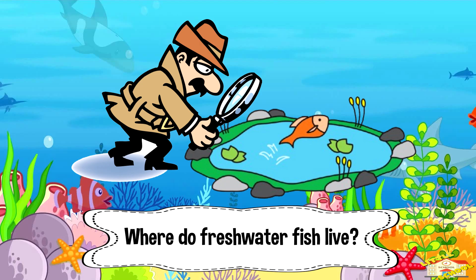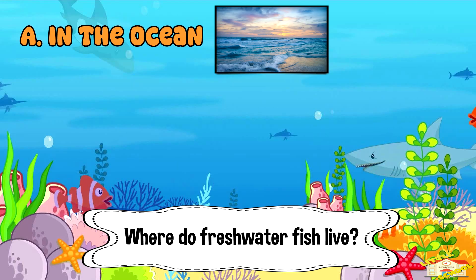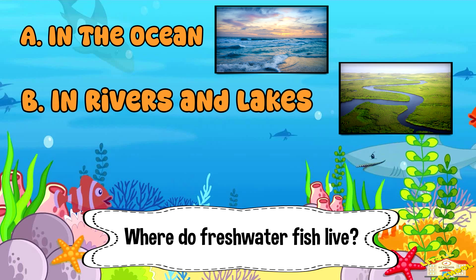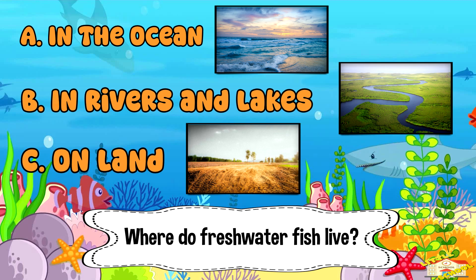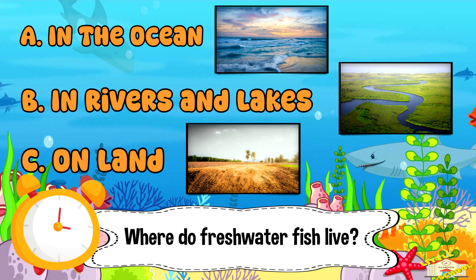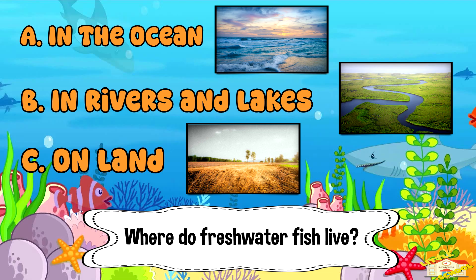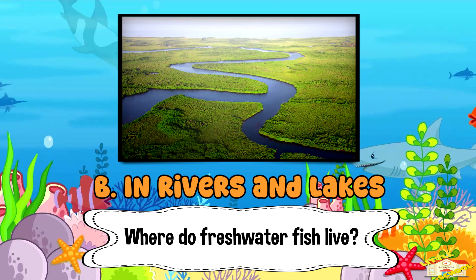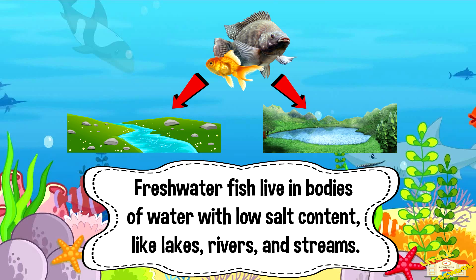Where do freshwater fish live? A: in the ocean, B: in rivers and lakes, or C: on land? Five, four, three, two, one. And the answer is B: in rivers and lakes. Freshwater fish live in bodies of water with low salt content, like lakes, rivers, and streams.